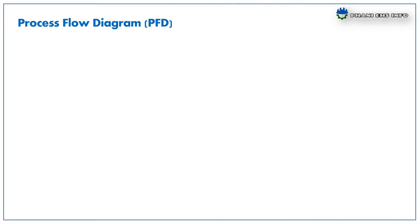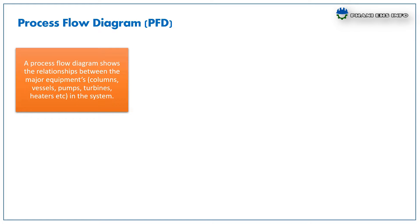What is process flow diagram? A process flow diagram shows the relationship between the major equipments like columns, vessels, pumps, turbines, heaters, etc. in the system.